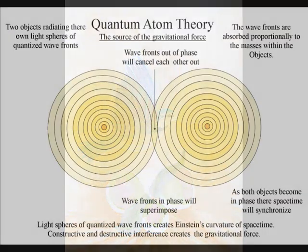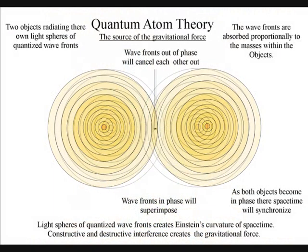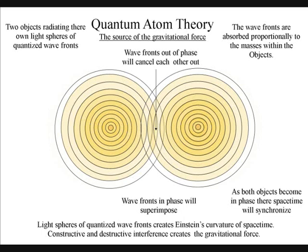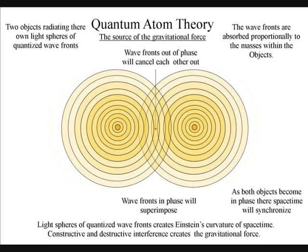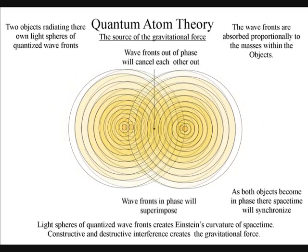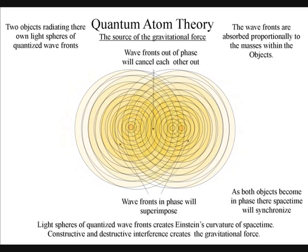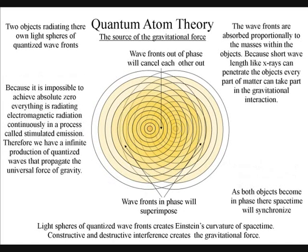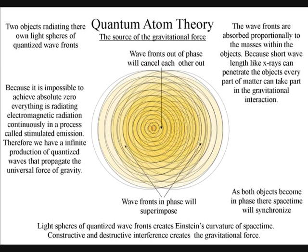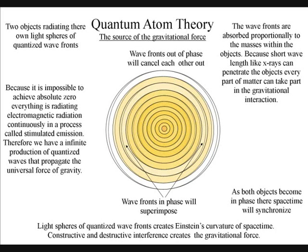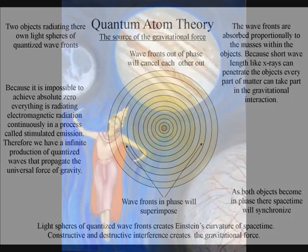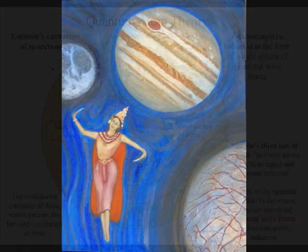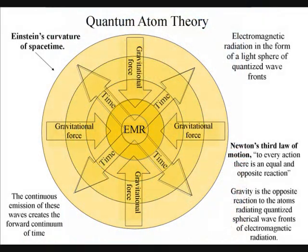When the wavefronts of two spheres come in contact, we will have destructive interference, and the wavefronts out of phase will cancel each other out. There will also be constructive interference between the wavefronts that are in phase, and they will superimpose. The radiant energy will be entirely absorbed proportionally to the masses within the objects. This will cause an unbalanced force, and the two objects will resonate together in a process known as gravity.